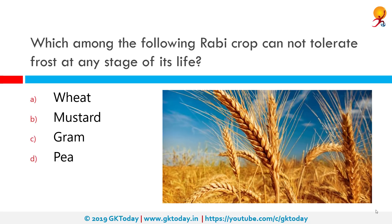Which among the following rabi crops cannot tolerate frost at any stage of its life? The correct answer is gram. A good rain in winter spoils the rabi crops but is good for kharif crops. The major rabi crops in India are wheat, followed by barley, mustard, sesame, and peas.